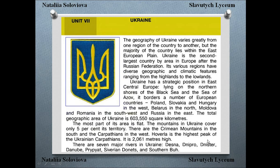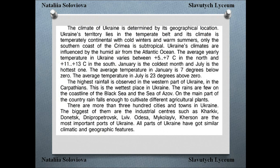There are seven major rivers in Ukraine: Desna, Dnipro, Nistir, Danube, Pripyat, Siverskyi Donets, and Southern Bug. The climate of Ukraine is determined by its geographical location. Ukraine's territory lies in the temperate belt and its climate is temperate continental with cold winters and warm summers. Only the southern coast of Crimea is subtropical. Ukraine's climate is influenced by humid air from the Atlantic Ocean. The average yearly temperature varies between plus 5 to plus 7 degrees Celsius in the North and plus 11 to plus 13 degrees Celsius in the South.